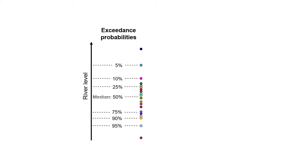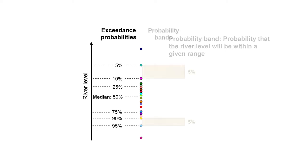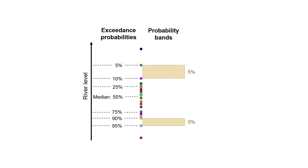The 50% chance of exceedance is known as the median. Alternatively, we can identify the probability that the river level will be within a given range. This gives us what is called a probability band. Here, we see the range of river levels represented by 5% probability bands.